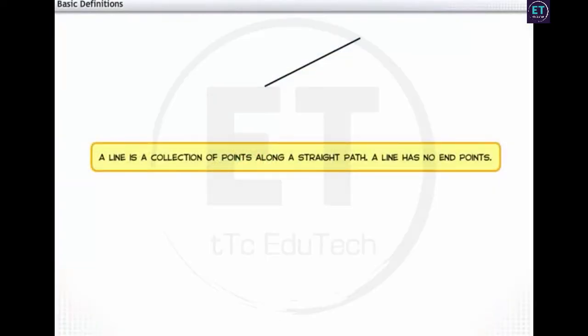A line is a collection of points along a straight path. A line has no endpoints. A line can be extended indefinitely in both directions. Let's call this line AB. It is denoted by a double headed arrow. Sometimes lines are also denoted by small letters L, M, N and so on.